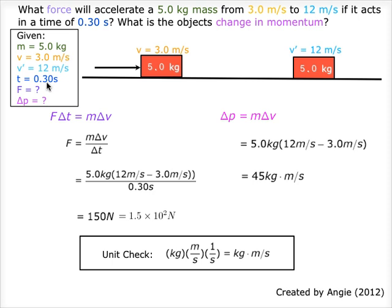Equations are chosen which fit the information given, shown in purple and pink — the two equations in the unit of momentum. The purple one is to solve the force and the pink one is to solve the change in momentum. Values are substituted and the equation is solved. Make sure you round to the correct sig figs and double check the unit.